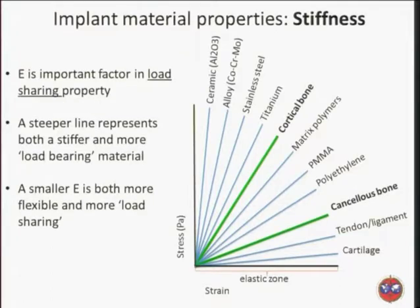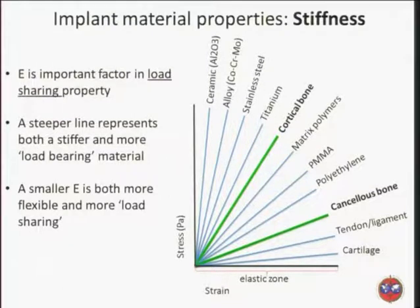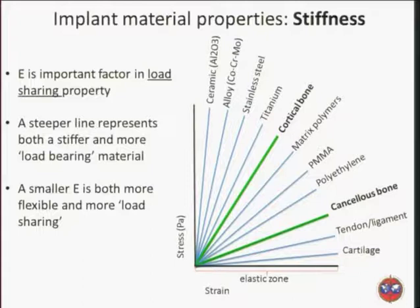First, I'd like to talk about the measure of stiffness and implant materials. Stiffness comes from the elastic portion of the stress-strain graph. We can see all these different materials here — cortical bone is highlighted. The closer a material gets in its stiffness to cortical bone, the more load sharing it will be. If it's much stiffer than cortical bone, then it will be more load bearing, and we want to use those two different things to our advantage.